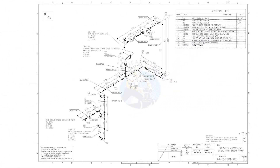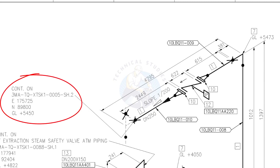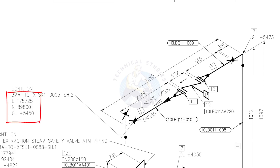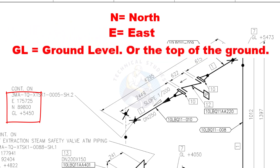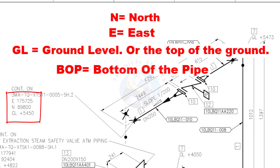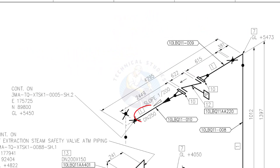Let us go to the drawing. This drawing is the continuation of the previous drawing. See the coordinates — N means North, E means East, and GL means Ground Level. GL and BOP are the same here; BOP means Bottom of the Pipe. D250 means the nominal diameter of the pipe is 250, which we already know is equal to 10 inch NB. Slope 1 to 200 means the pipe is sloped 1 millimeter in every 200 millimeters. Consider a pipe with 1000 millimeters length — it would have a 5 millimeter slope.